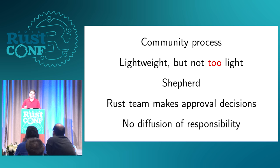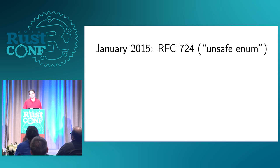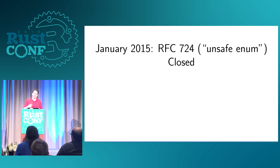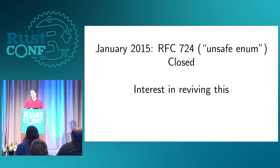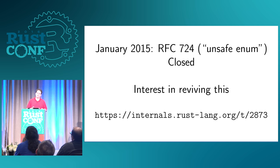I looked around for details of what I could do with unions. It turns out there was an RFC already for this in January of last year — RFC 724 for unsafe enum. This was: let's have an enum without a discriminant. Unfortunately, that actually got closed without being adopted. But there was some interest in reviving it based off of renewed interest in the FFI layer. There was a thread on the discourse forum talking about reasons why we still need this and the approach we could take to solving this problem. So I started poking at this trying to come up with a new approach that might have more interest and more ability to get adopted.